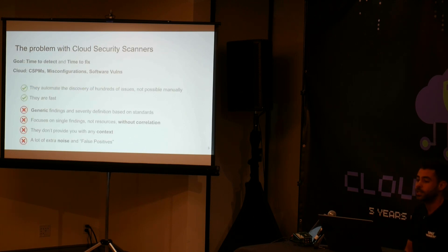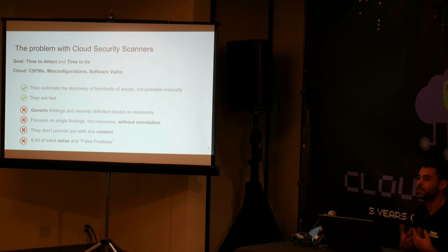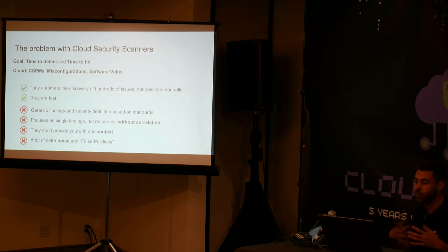Automation in security, and especially in vulnerability management, is key. It helps us save time, but also with what is really important — which is not the amount of findings we have, it's the time it takes to detect them and fix them. In cloud, the most common security scanners available are CSPMs, misconfiguration scanners, and software vulnerability scanners.